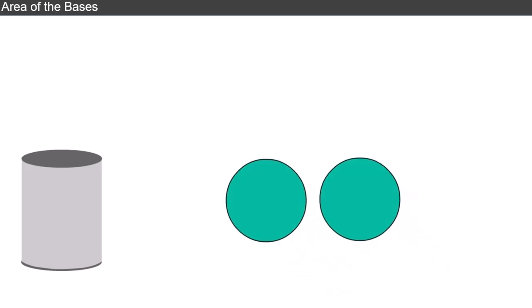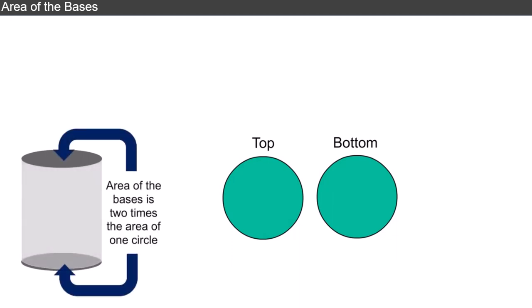Now let's return to those circles, the top and the bottom, that we ignored earlier. The area of the bases is two times the area of one circle, since the cylinder has both a top and a bottom. The formula for calculating this area equals two times pi times the diameter squared divided by four, or simplified to equal pi times the diameter squared divided by two.